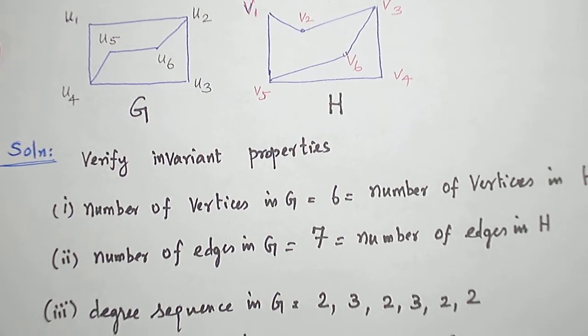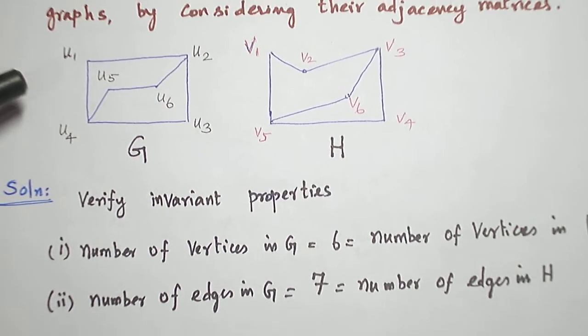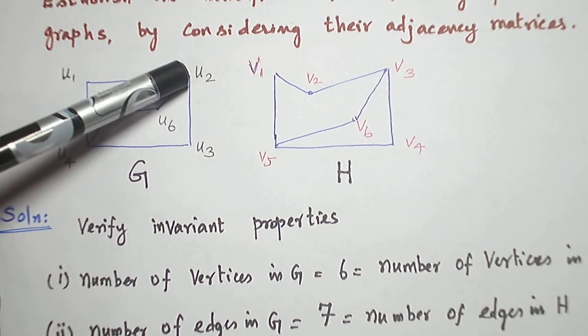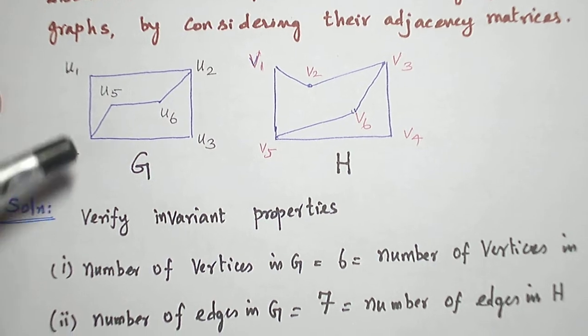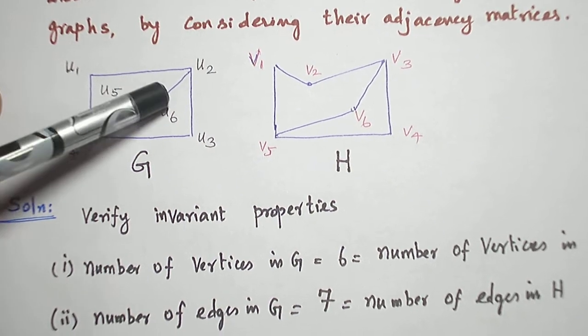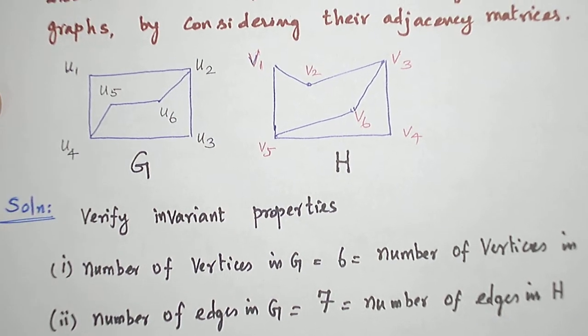there are two circuits of length five in graph G. This is one circuit, and this is another circuit.